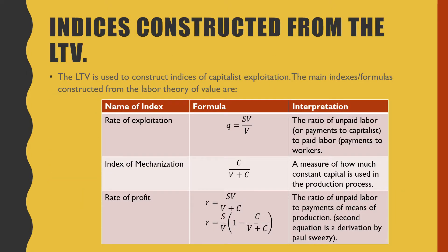The labor theory of value is used to construct indices of capitalist exploitation. The main formulas are: the rate of exploitation, Q = SV / V, which is the ratio of unpaid labor or payments to the capitalists to paid labor, which are payments to workers. The index of mechanization, C / (V + C), which is a measure of how much constant capital is used in the production process. And the rate of profit, R = SV / (V + C), which is the ratio of unpaid labor to means of production.